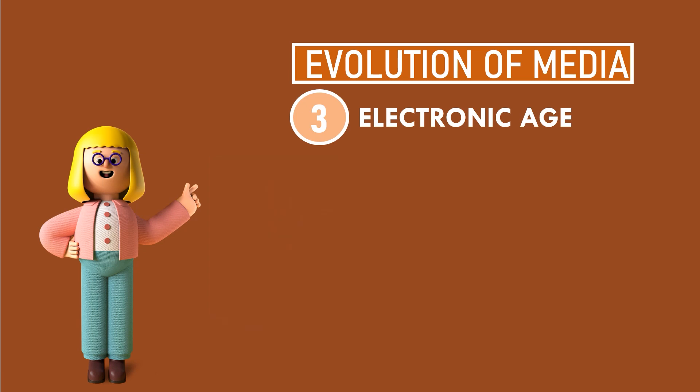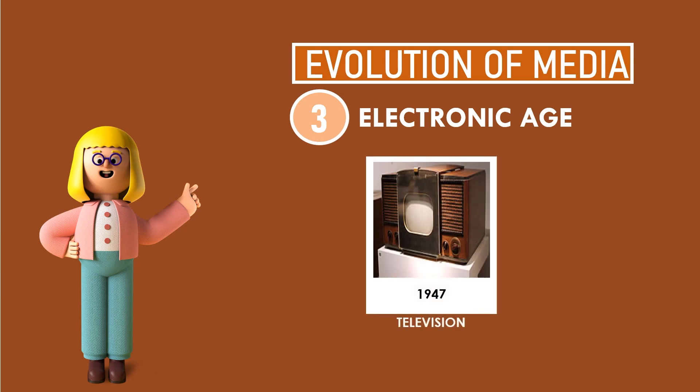The next one is the television. This is a device used to electronically transmit moving images and sounds from a main source to a receiver. It has extended our capacity to talk and listen even if people are far from each other, and its implementation spread across the world and made a big difference in media and communication. Philo Farnsworth is the developer of the first all-electronic television system, and in 1947 the first television set was created.